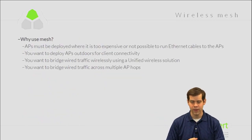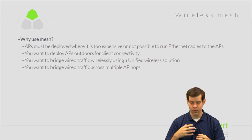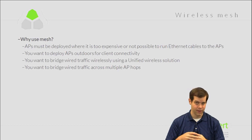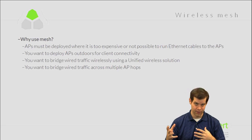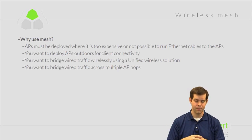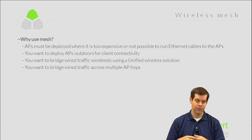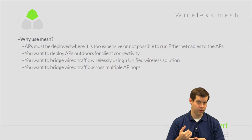There are four main cases where you typically use mesh, both indoor and outdoor. First, if you need to deploy APs where it's too expensive or not possible to run cables — maybe you're exceeding the 100-meter distance limitation on copper cable and don't want to do fiber with copper-to-fiber conversions, or outdoors it would cost too much to dig up parking lots. If it's too hard or not feasible to run cables, you can connect them wirelessly. That's one case for mesh.